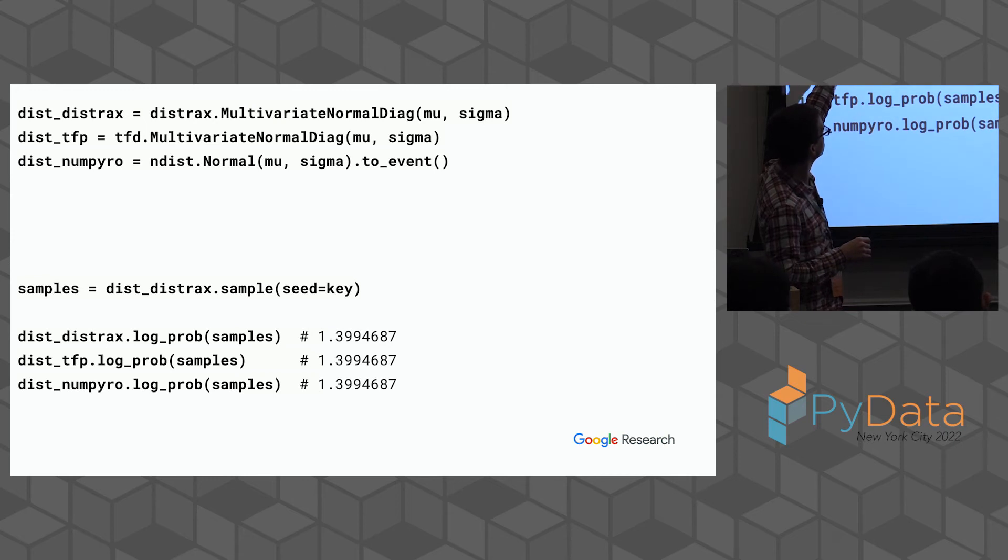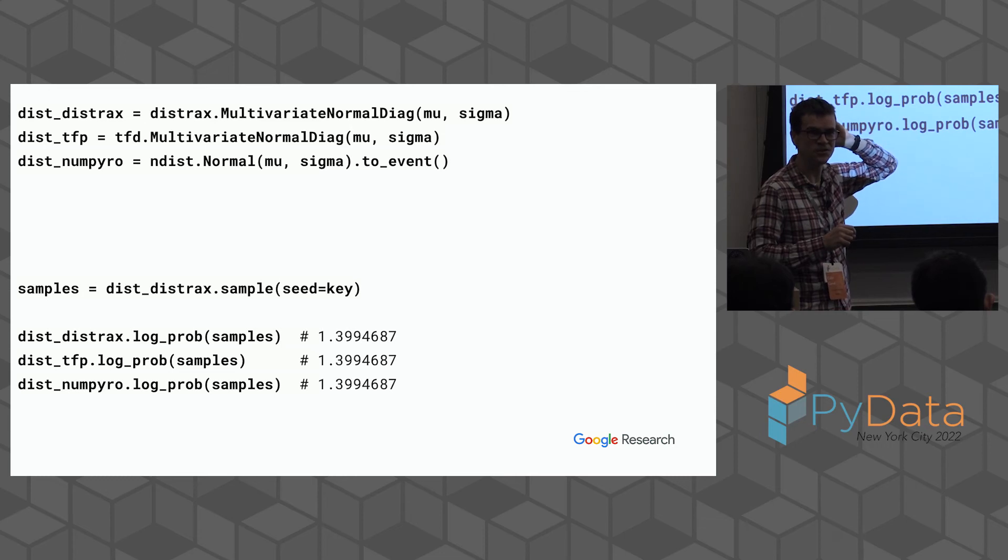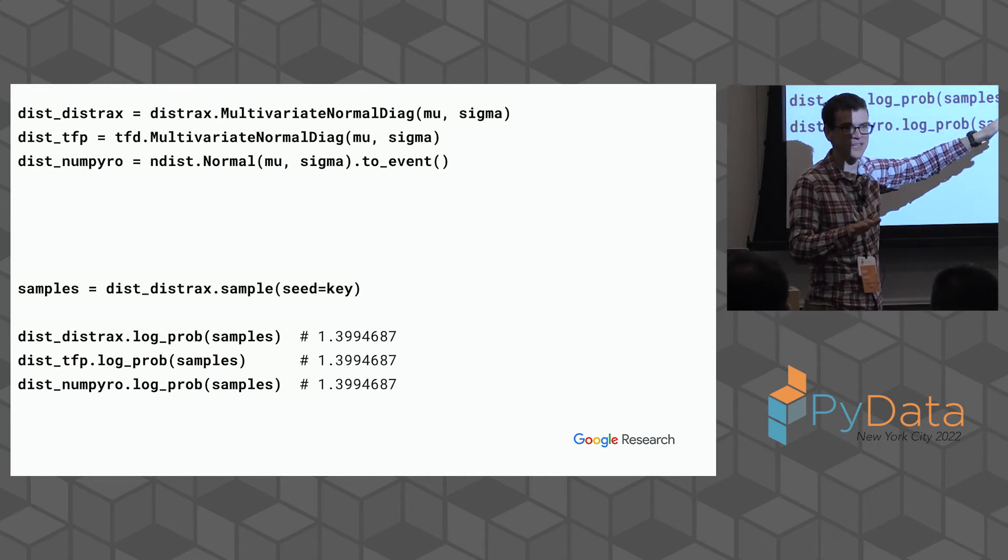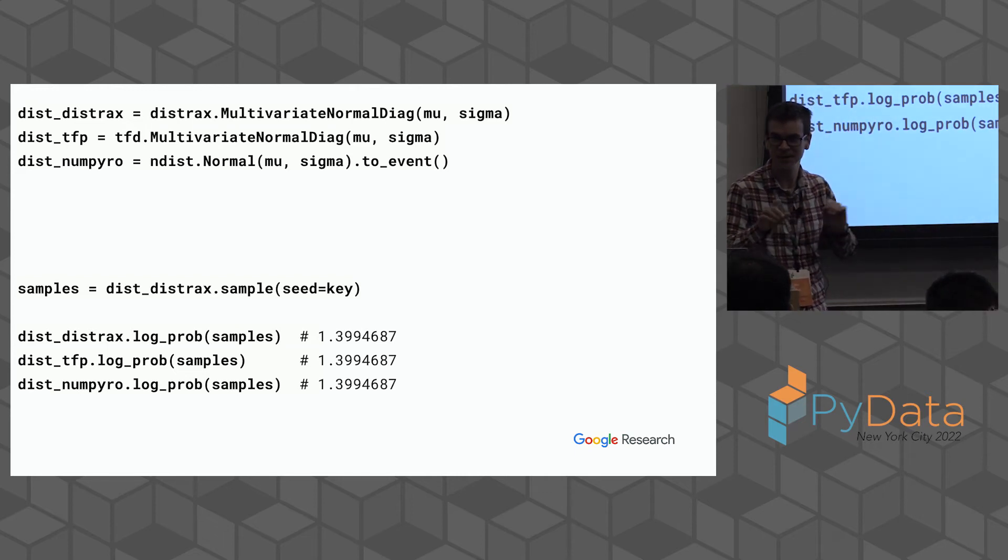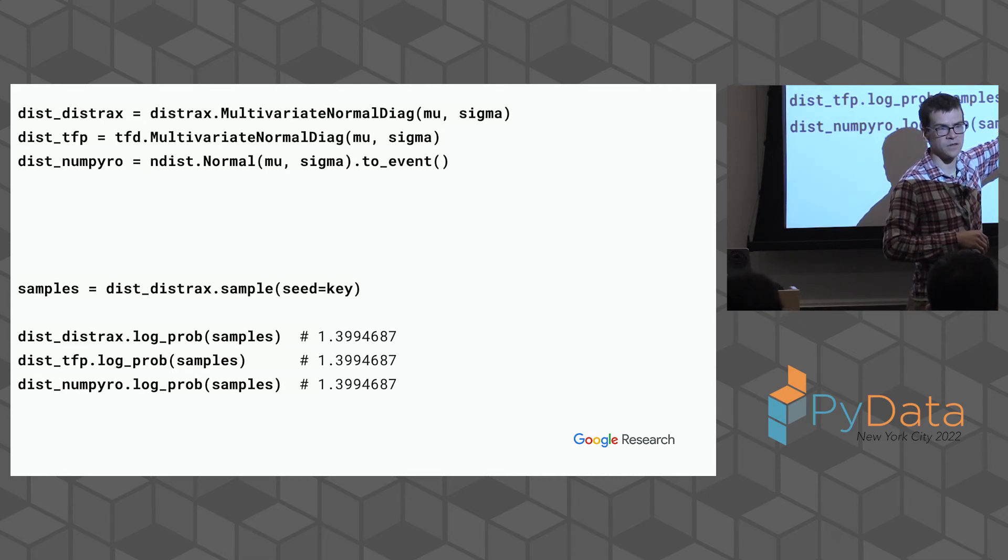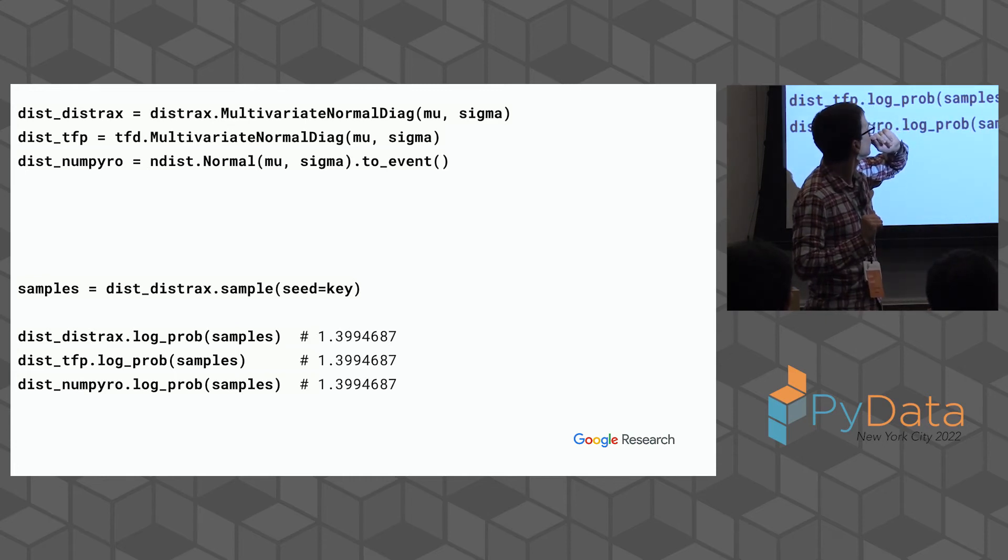But now I can do cool JAX tricks. I have these three distributions. I can draw some samples using, say, Distrax, and then I can compute the log probability of them using any of the three distribution objects. So I'm trading from one library to these others. It turns out that sampling normal distributions is such a standard task that if you draw the samples from any of the three libraries using the same JAX key, you'll actually get the exact same samples, which is not behavior I would rely on, but it does happen.